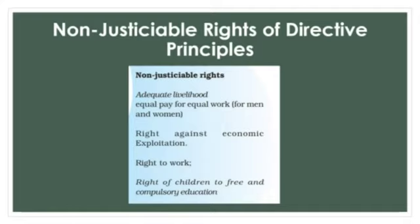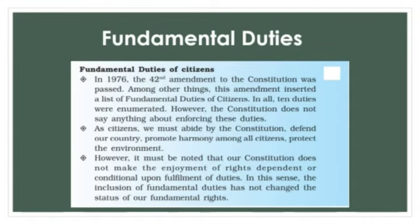Non-Justiciable Rights of Directive Principles. Non-justiciability refers to limits upon legal issues over which a court can exercise its judicial authority. State courts also have rules requiring matters brought before them to be justiciable. In simple words, Directive Principles are non-justiciable rights — they can just guide the government. Examples include: equal pay for equal work among men and women, right against economic exploitation, right to work, and right of children to free and compulsory education. As citizens, we expect many more rights from the government and demand that all these rights must be provided.